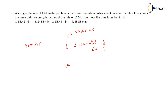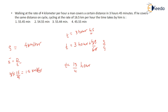The total time comes out to be 15/4 hours. You have the speed and the time, so now you can find the distance. Using speed = distance / time, the distance is 4 × (15/4) — the 4s cancel — giving a distance of 15 kilometers.